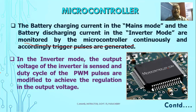Based on the discharging current, the output T-on period of the PWM is controlled. The PWM is controlled by adjusting the T-on period.